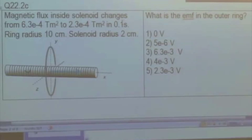So we're just reducing the magnitude of the magnetic field in a very short amount of time. What's the EMF induced in the outer ring? See if you can remember how we did this type of problem last time.